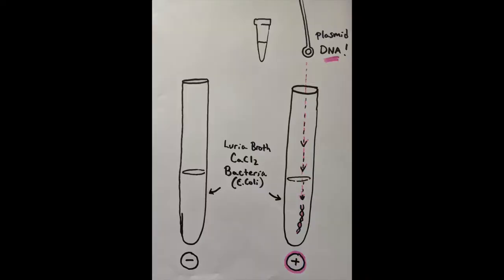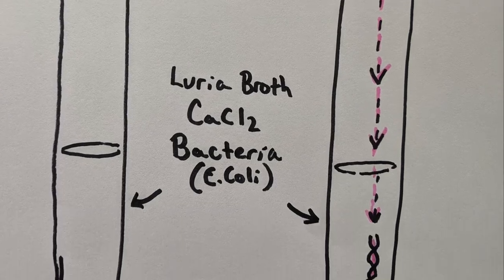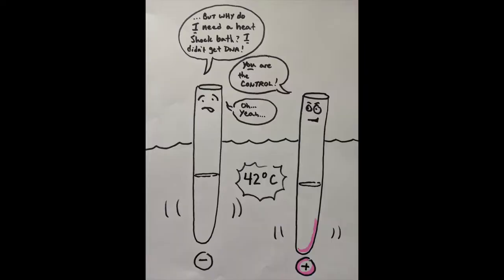Next, we add the DNA to the plus test tube — adding restricted fragments of DNA in solution. We use an inoculating loop: dip it in, lift it up so you have a bead of solution, put it into the bacteria, and spin it to make sure it drops off. At this point, we return everything to ice and prepare a water bath at 42°C. Remember, you always do with your control what you do with your test, so we put both the minus and plus labeled test tubes in the water bath and heat shock them — going immediately from ice to 42°C.